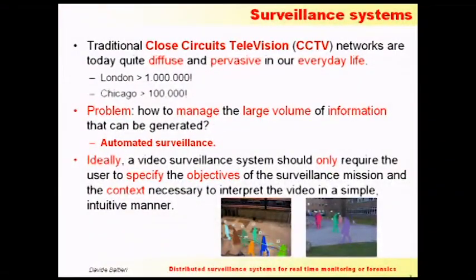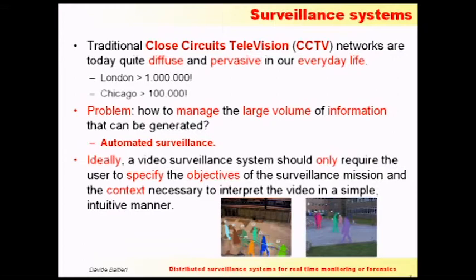In the last years, closed-circuit television networks and surveillance networks have become quite diffuse and pervasive in our everyday life after 9/11, to the point that some CCTV networks are so large — London is quite famous for having more than 1 million CCTV cameras in the city, Chicago more than 100,000, and even Modena has more than 1,000 CCTV cameras. They have become so large that humans cannot manage to process all the information they generate every second — each camera works at 20 frames per second, 24 hours a day, 365 days a year, generating millions and millions of terabytes of data.